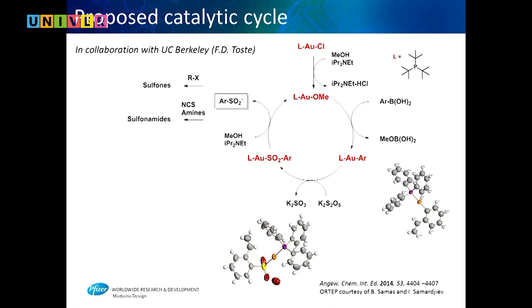The gold catalyst is activated by methanol, converting the chloride to a methoxy-gold complex, which then reacts with the aryl boronate to give the gold-aryl complex — we crystallized a couple of these. SO2 then inserts into the gold-aryl bond, giving a complex that is hydrolyzed back to the starting catalyst, releasing aryl sulfonate.